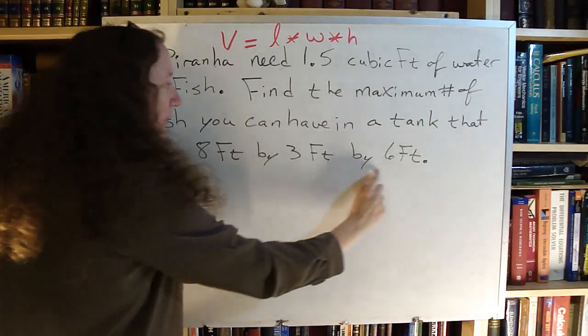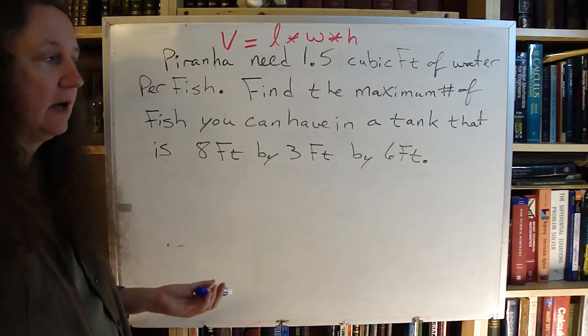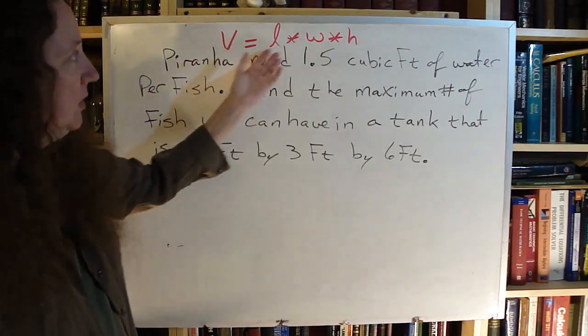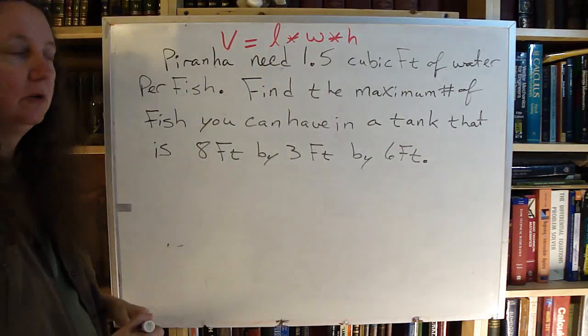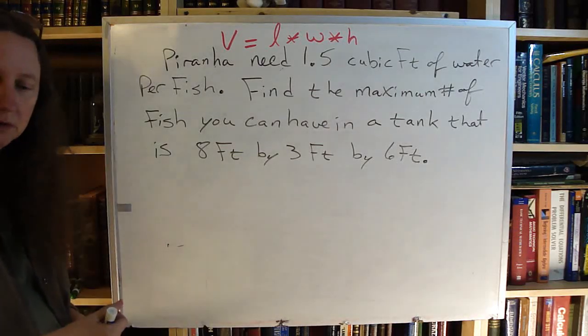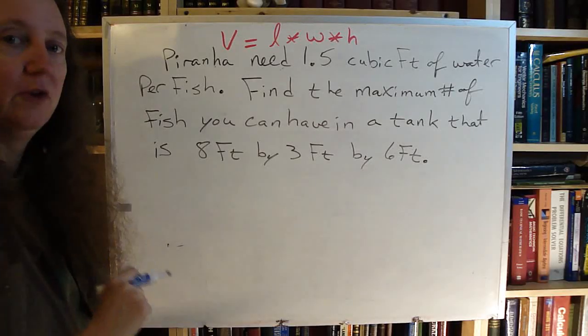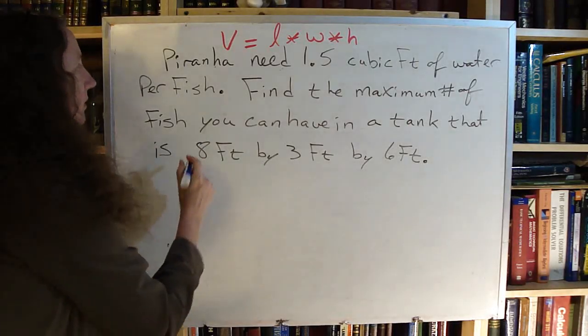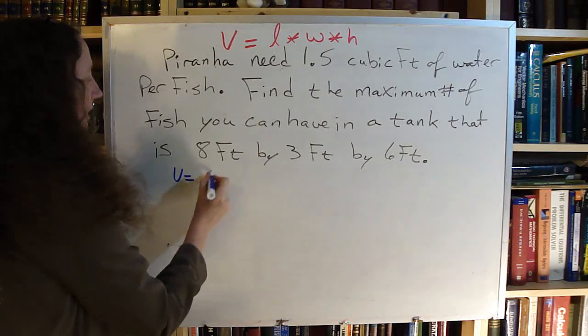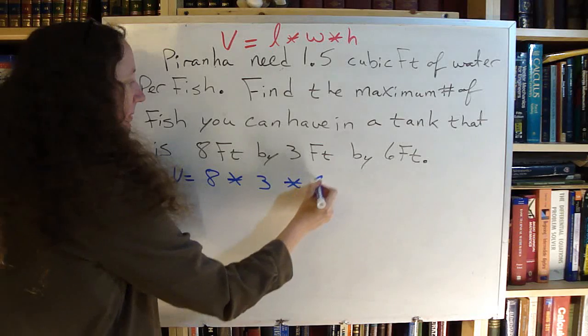So I have my three measurements. I don't know which is which, but it doesn't really matter because I'm going to be multiplying all of them. So I'm going to get the same answer no matter which one is which. That's the first thing that I need to do with this problem. So I'm taking volume is 8 times 3 times 6.